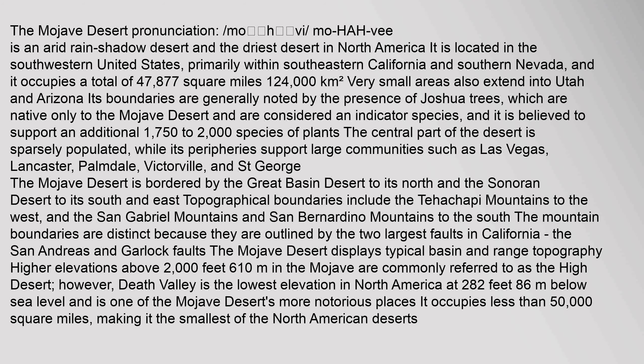Its boundaries are generally noted by the presence of Joshua trees, which are native only to the Mojave Desert and are considered an indicator species. It is believed to support an additional 1,750 to 2,000 species of plants. The central part of the desert is sparsely populated, while its peripheries support large communities such as Las Vegas.